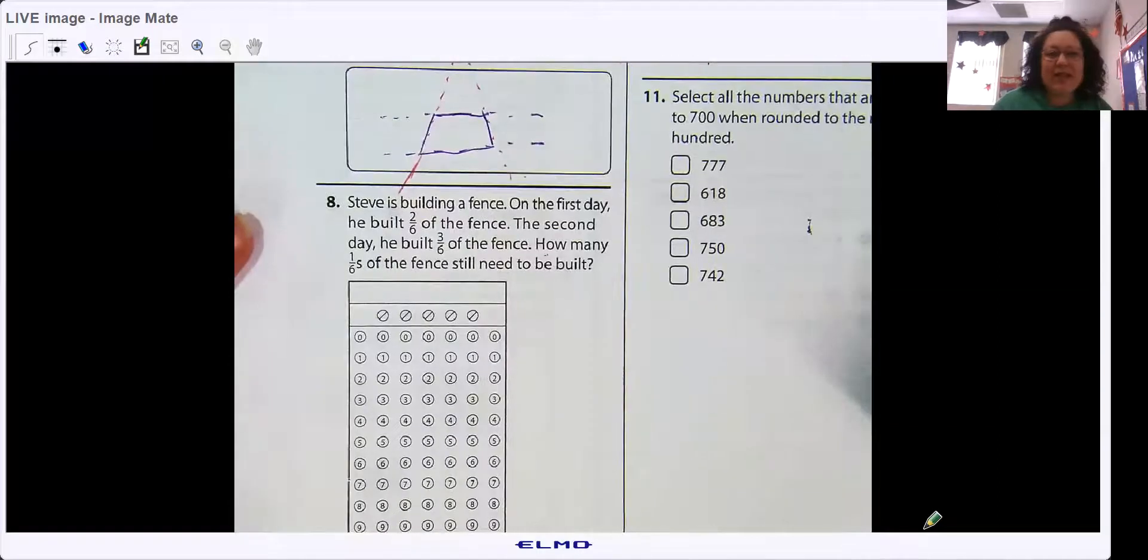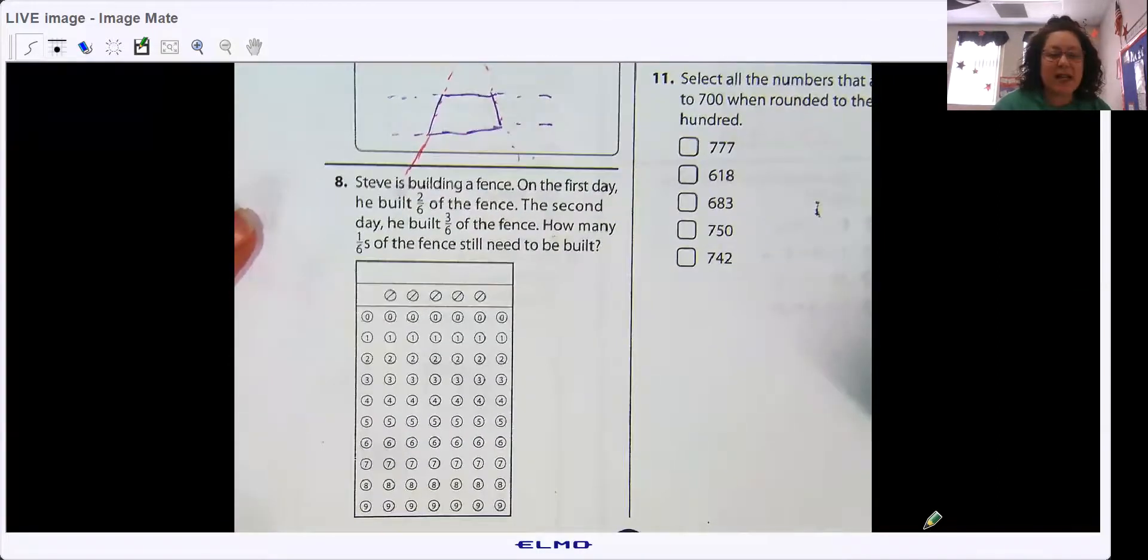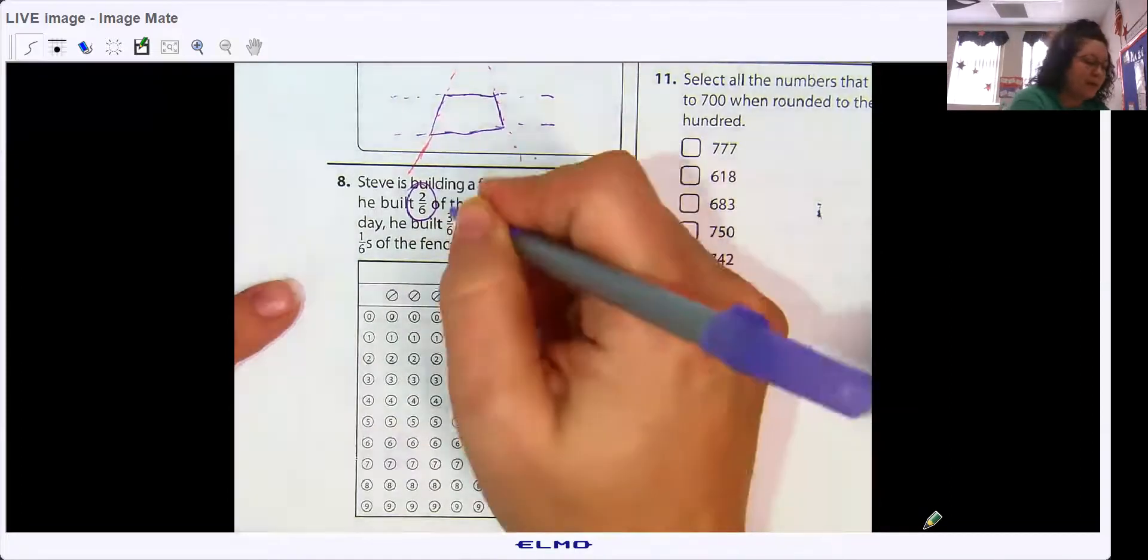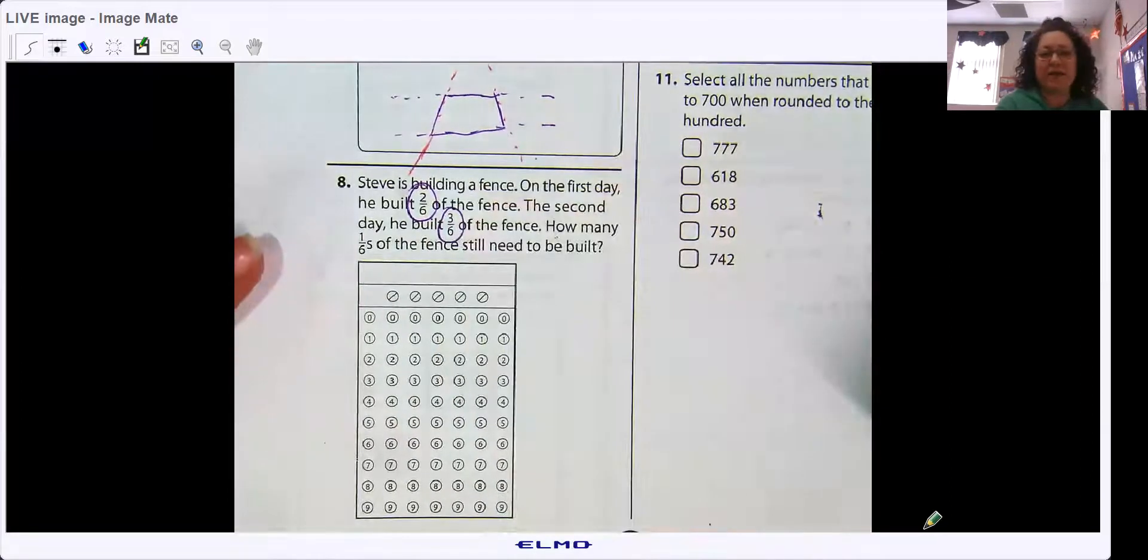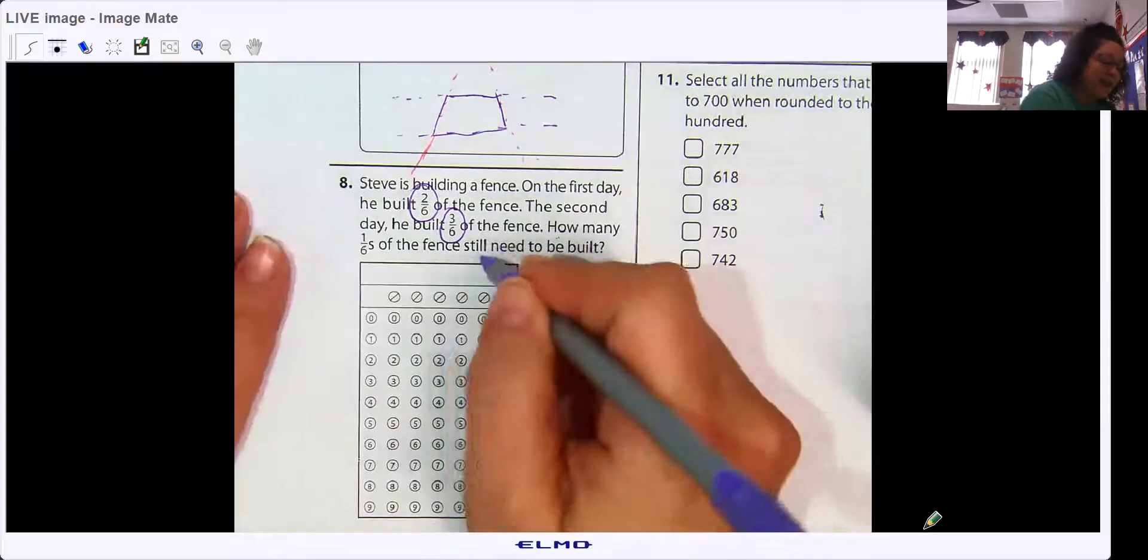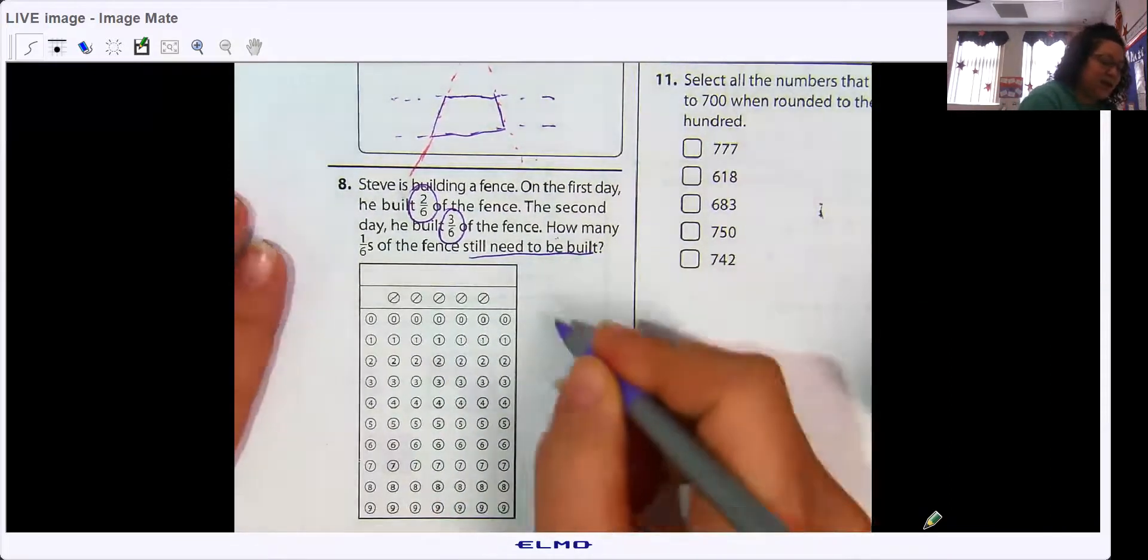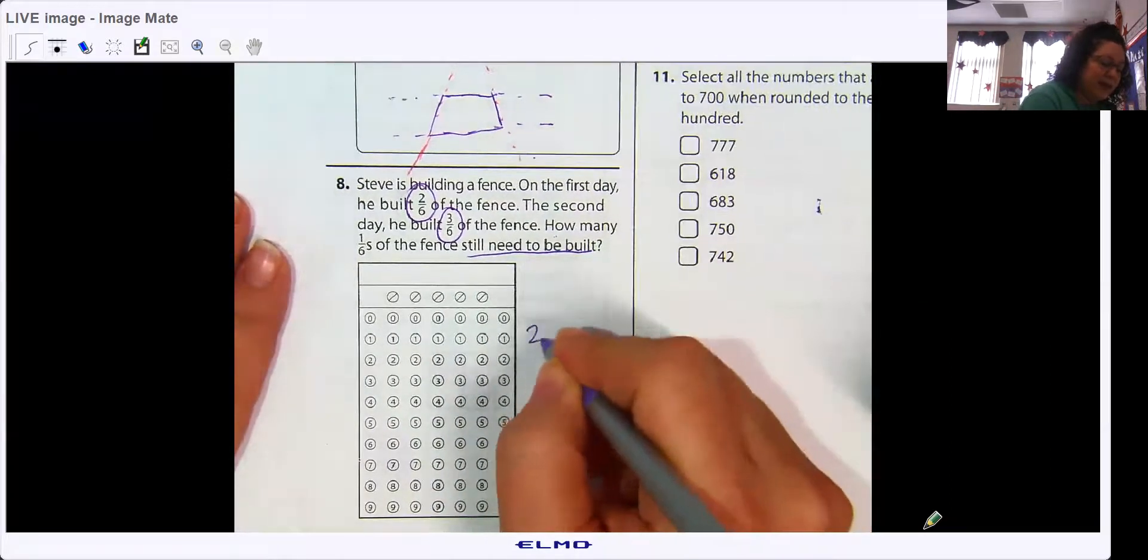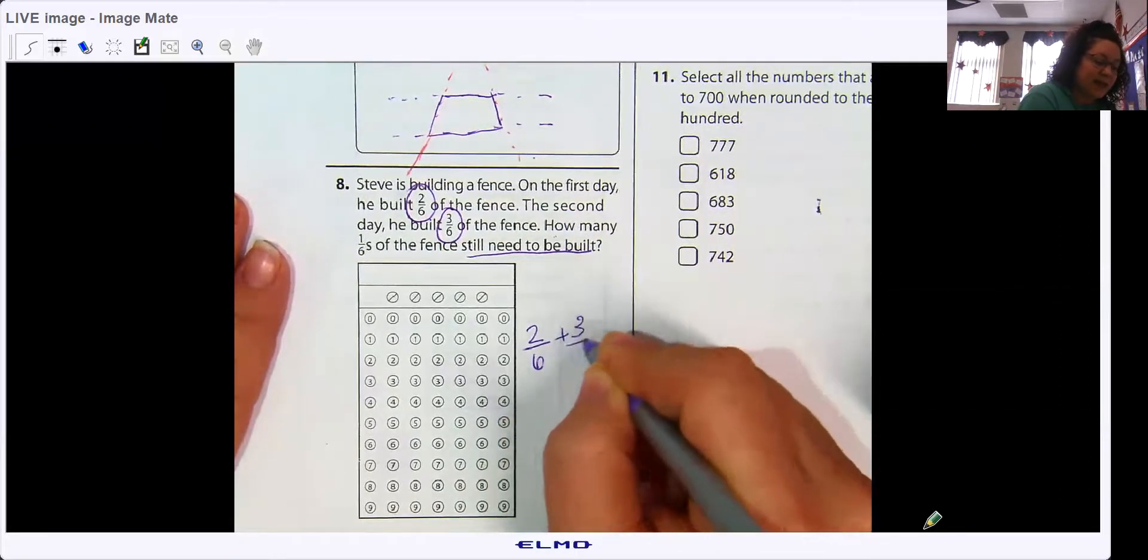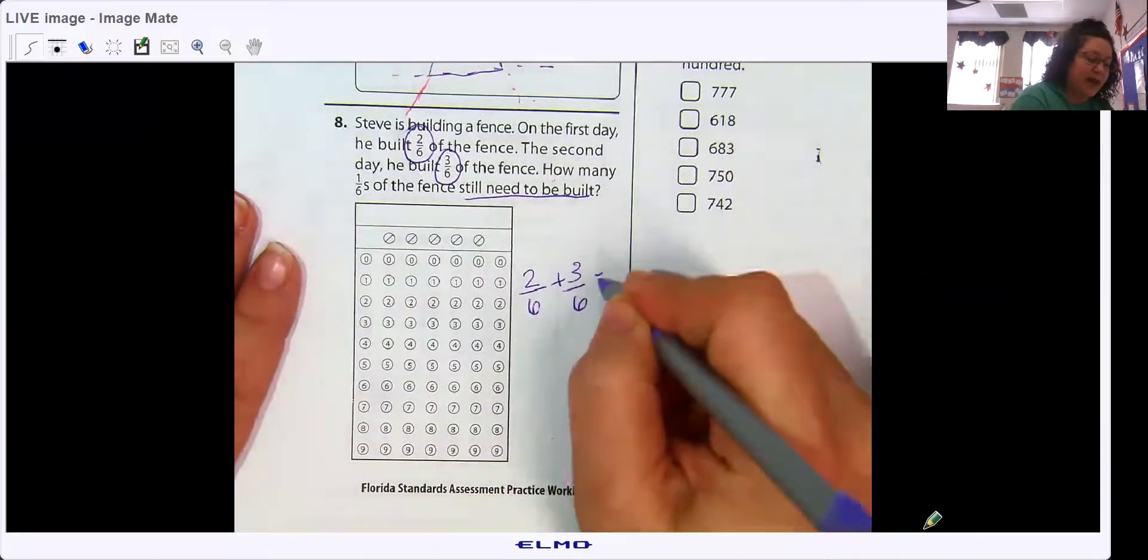And those are parallel lines. Okay. Steve is building a fence. On his first day, he built two sixths of a fence. The second day, he built three sixths of a fence. How many one sixths of the fence still needs to be built? So we need to know how much is left over. So he built two sixths and three sixths. So we would add those two together.